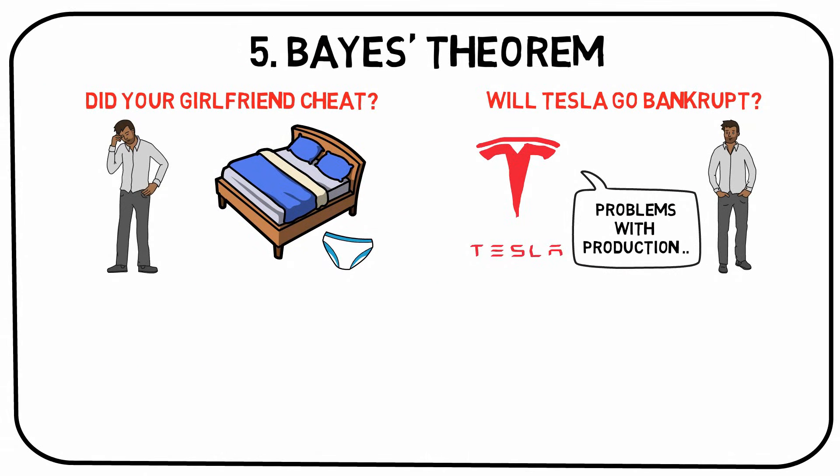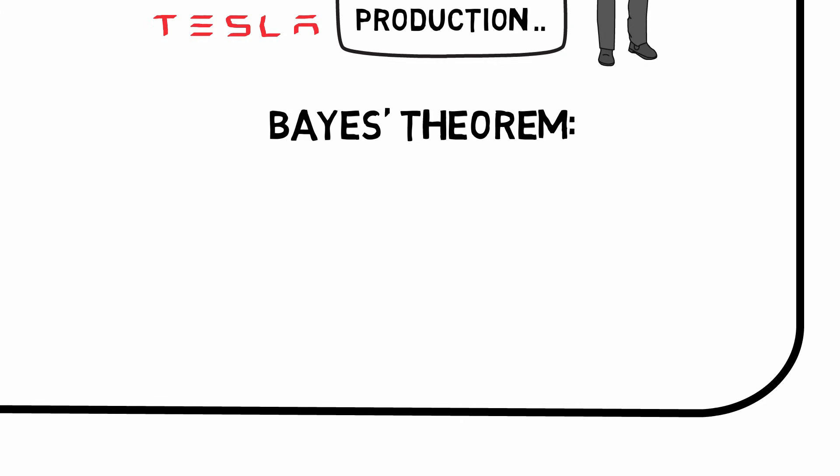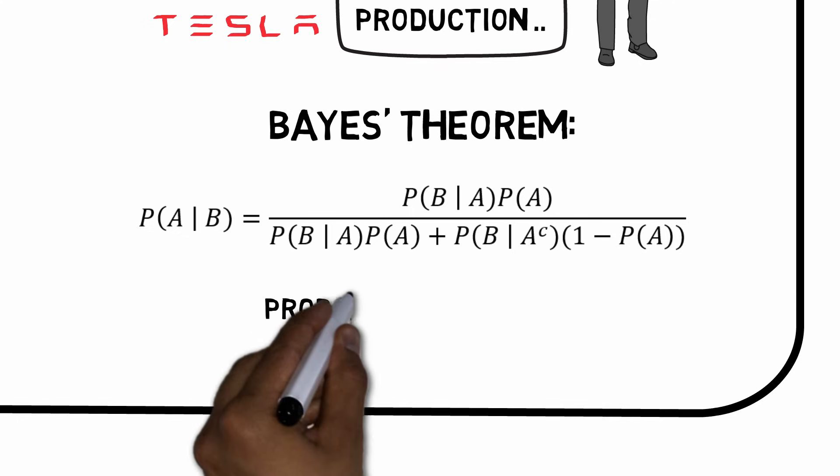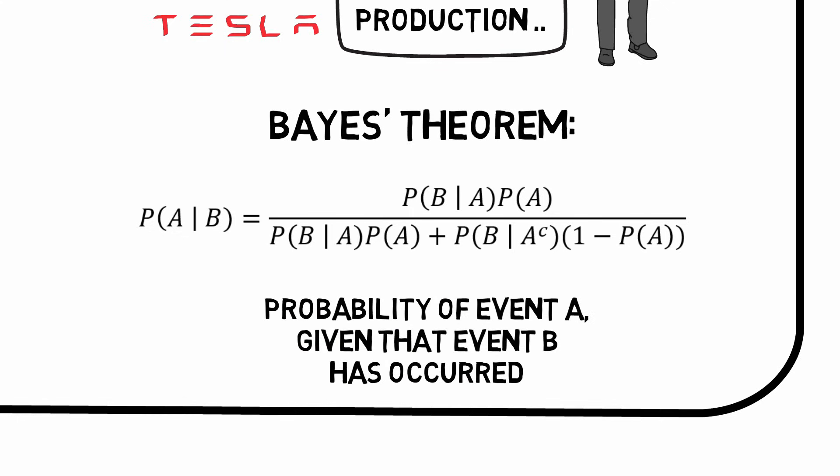Both of these examples involve updating a previous forecast when new evidence has presented itself. Most humans are terrible at this. Luckily, there is a solution: Bayes' Theorem. Bayes' Theorem is a mathematical formula that can help you in calculating the probability of something occurring, given that something else has happened. The mathematical equation looks like this. Let's apply it to our first example.